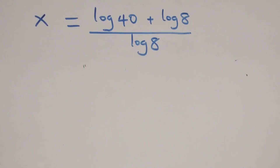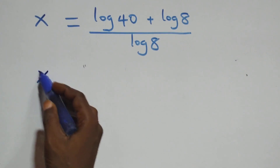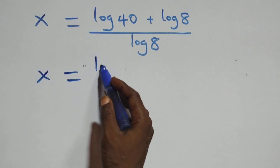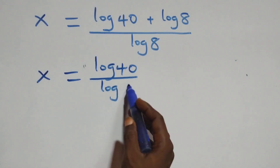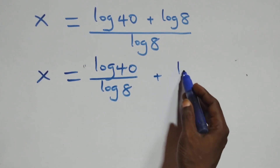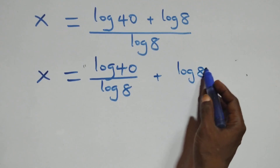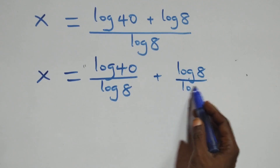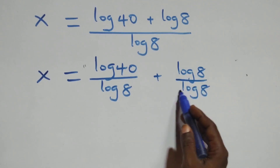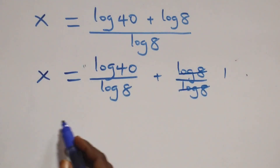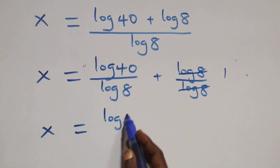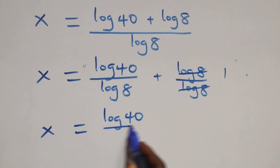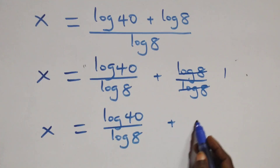We separate this into two fractions: x equals log 40 over log 8, plus log 8 over log 8. Here log 8 over log 8 cancels to give 1, which implies x equals log 40 over log 8, plus 1.